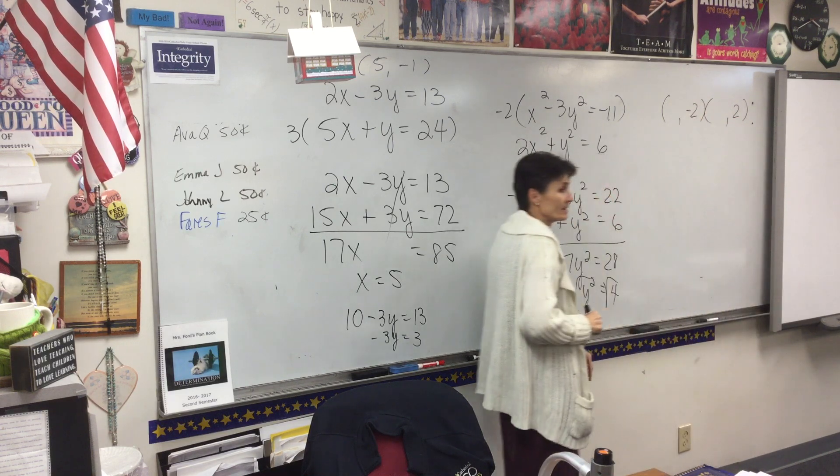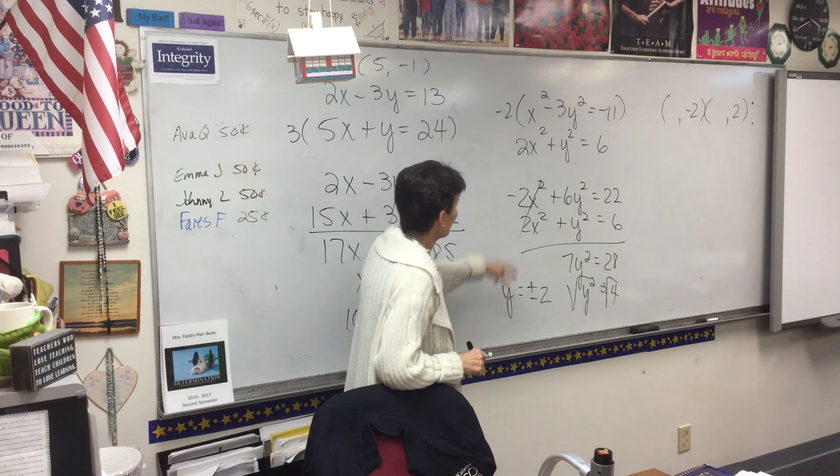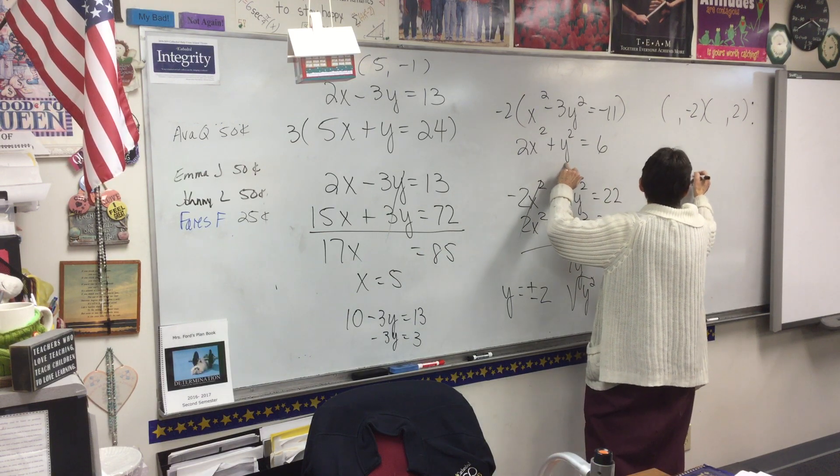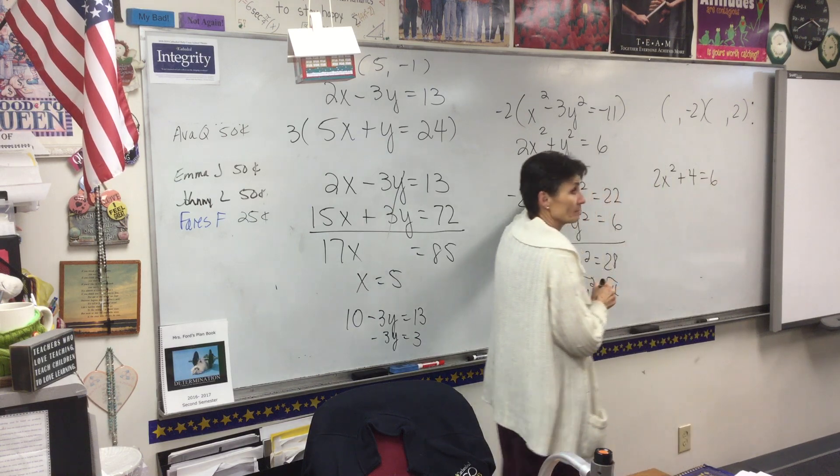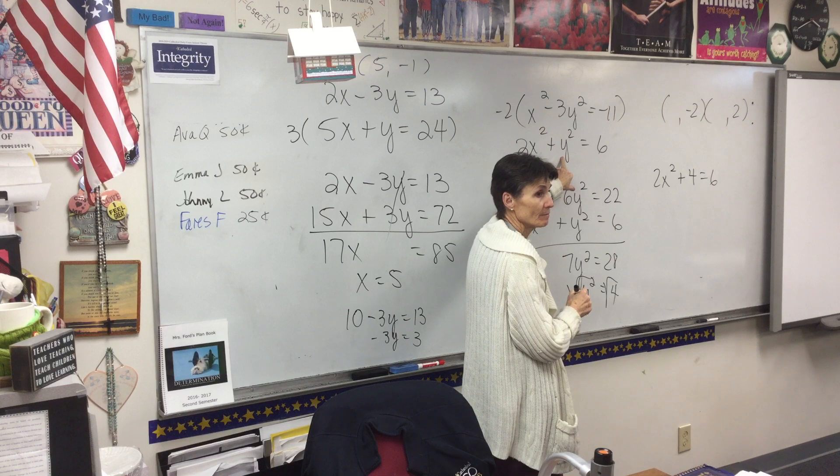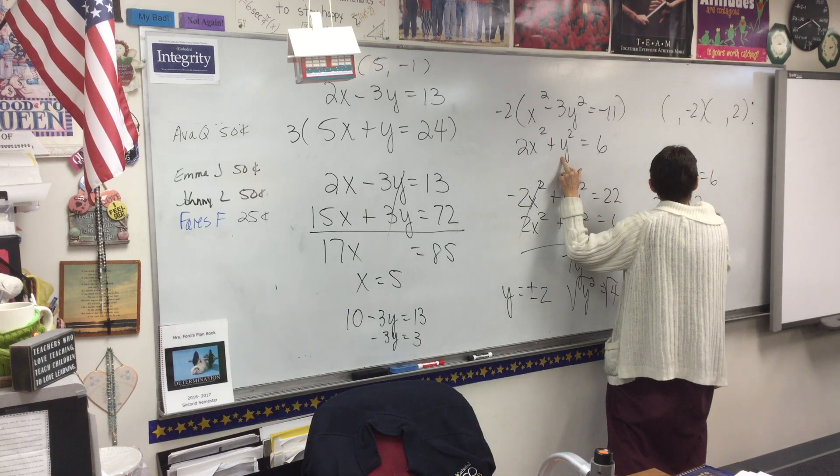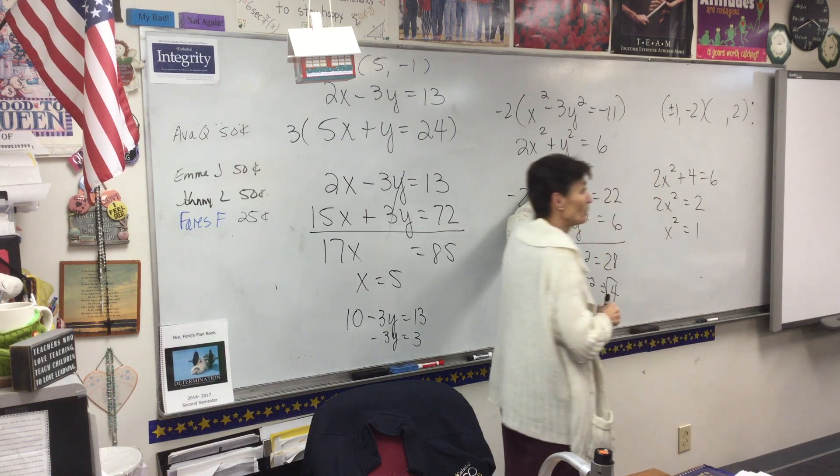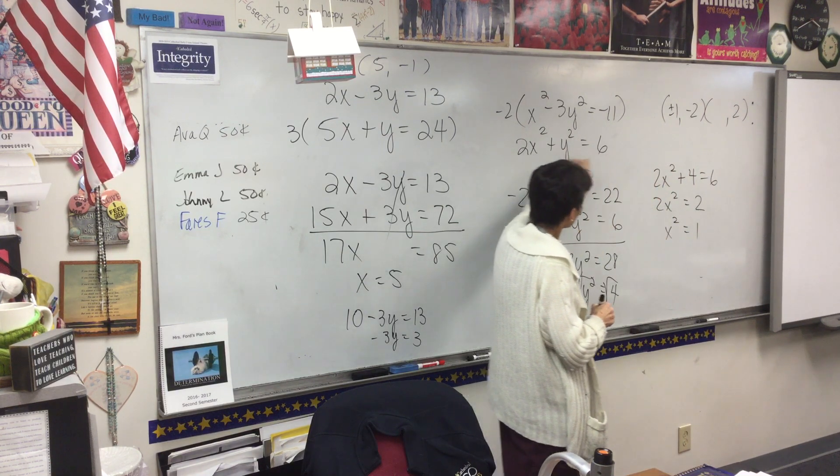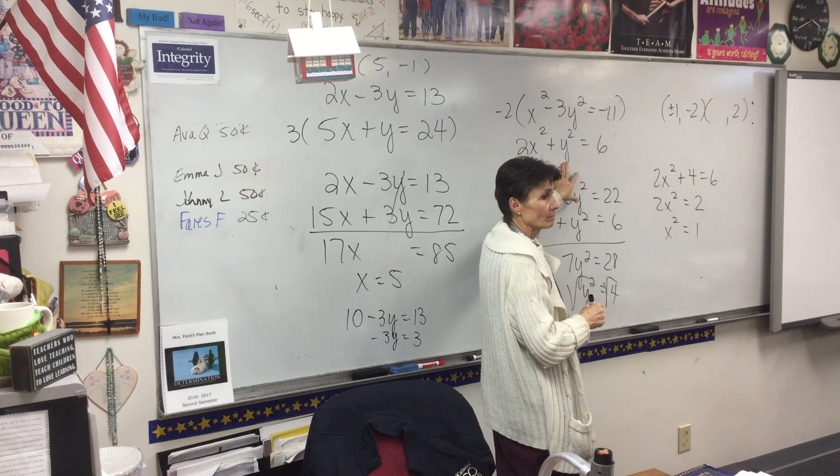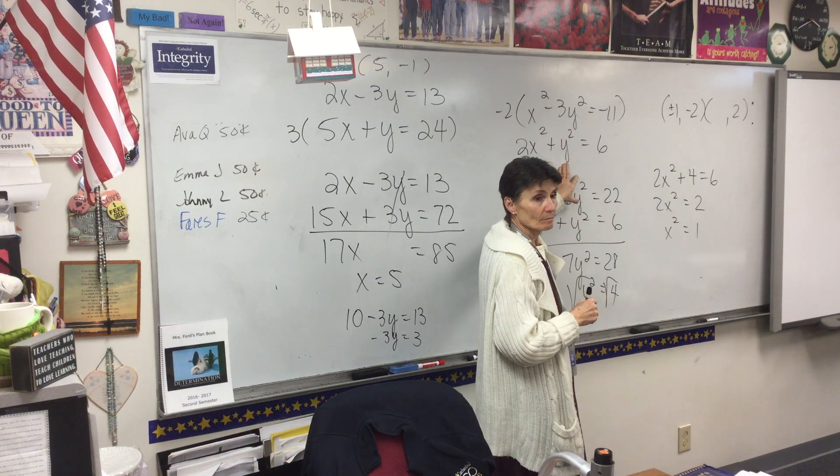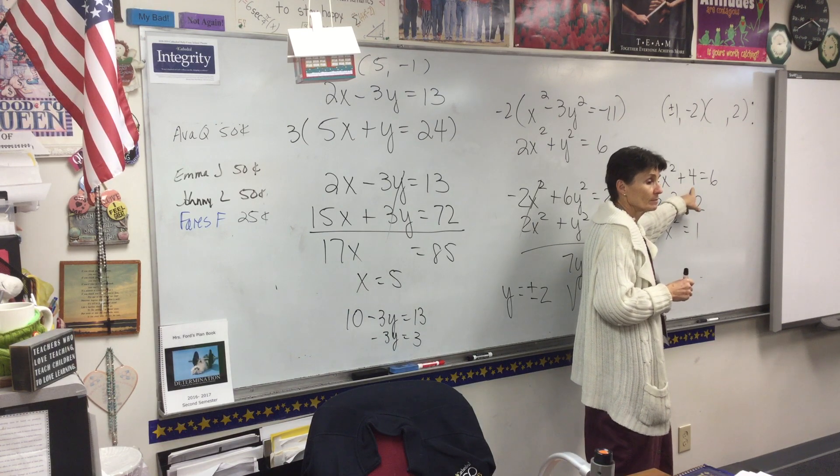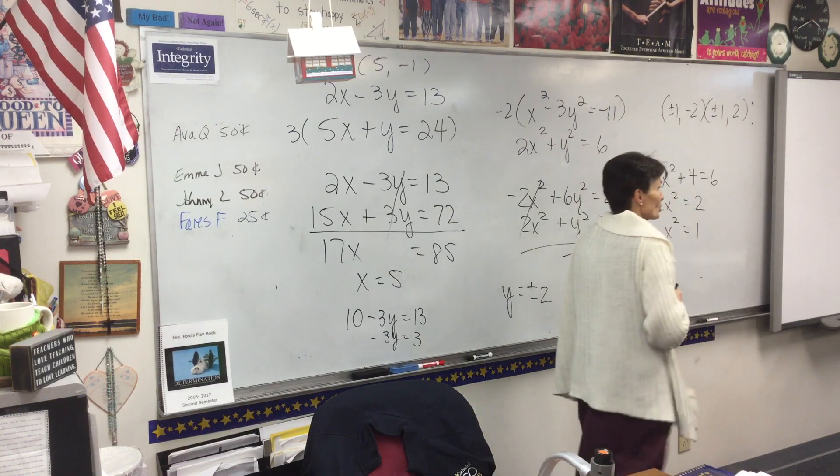Wait, we are not done. We have to find x. We already got y. We've got to find x. So I'm going to go right back to this equation right here. It says 2x squared plus 4 equals 6. If I put negative 2 in here, so 2x squared equals 2, x squared equals 1. So plus or minus 1 if I put in a negative 2. Now what if I put in a positive 2? Is it the same thing? Kids, what's 2 squared? 4. Same as negative 2 squared?